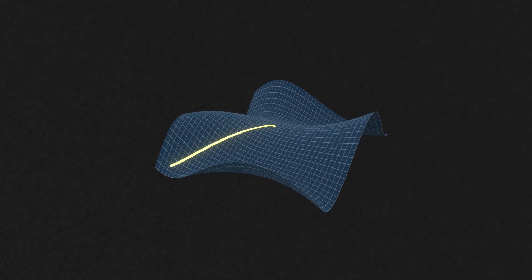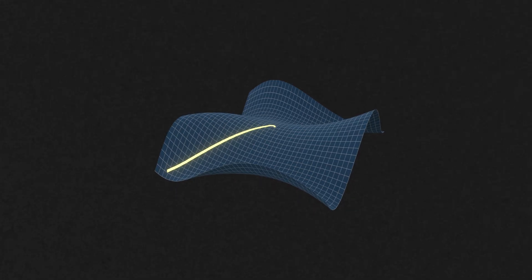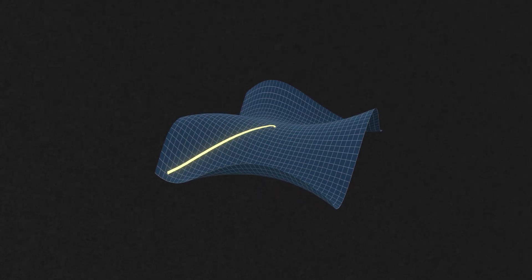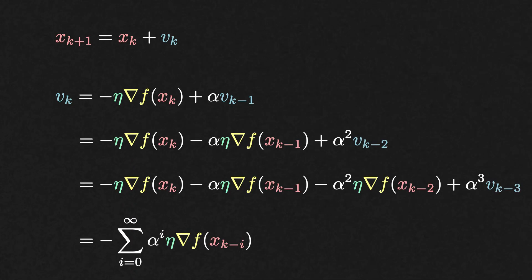To understand just how powerful this idea of momentum gradient descent is, let us see not one but two interpretations of how it works. The first interpretation is quite simple. When you unpack this recursive formula, you realize that momentum gradient descent keeps an exponential moving average of past gradients.